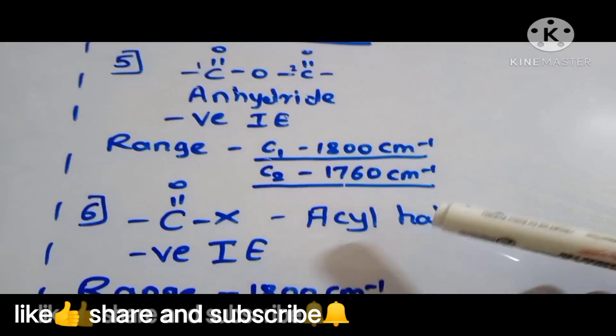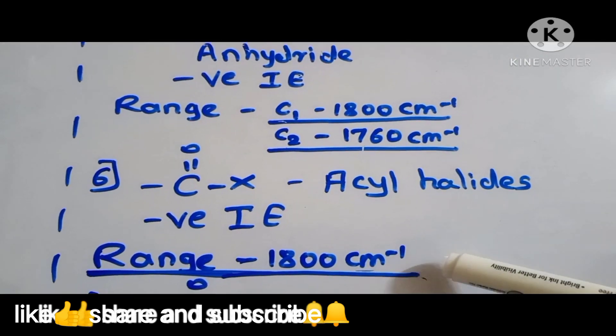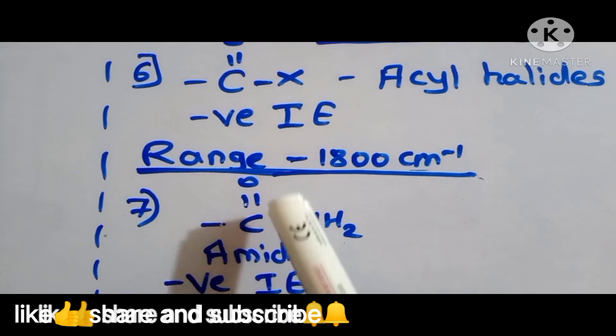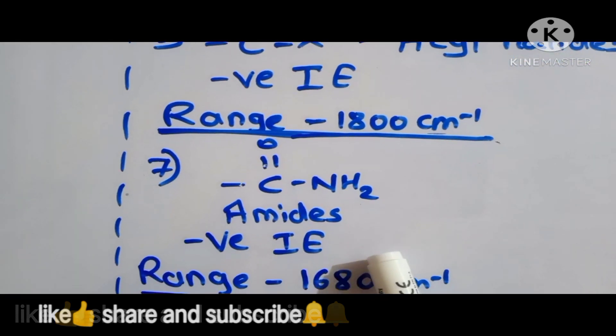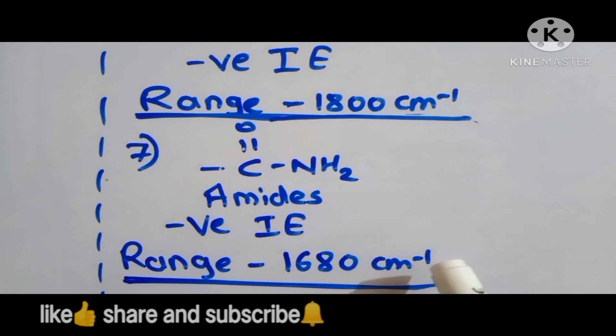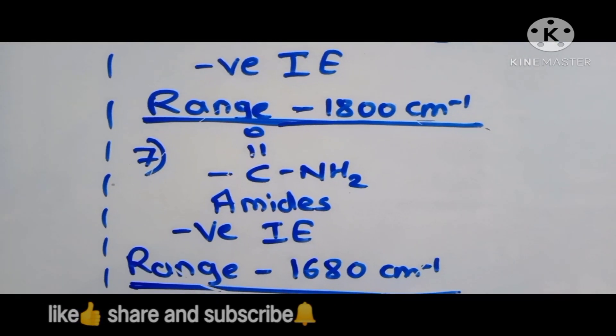These all ranges increase suddenly, so that's why it is easy to remember. And then seventh is the amide, C double bond O NH2 is amide, which shows negative inductive effect. This is an exceptional case which shows the range is 1680 centimeter inverse, the one and only carbonyl group which is an exceptional thing.